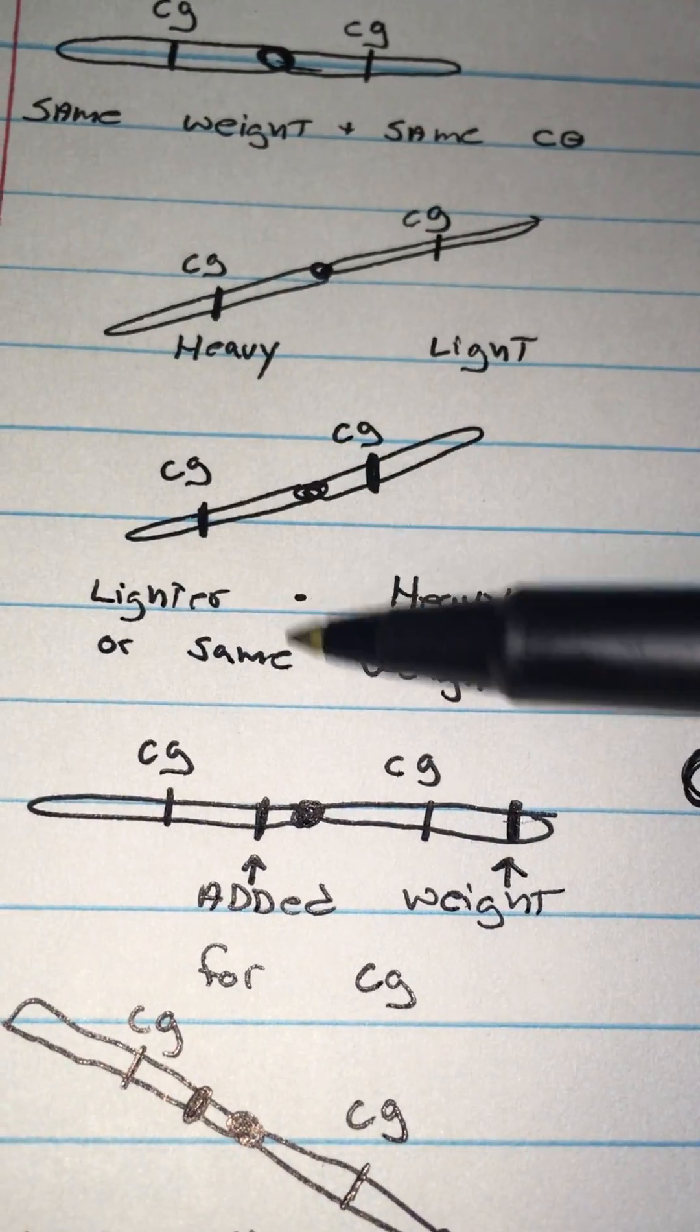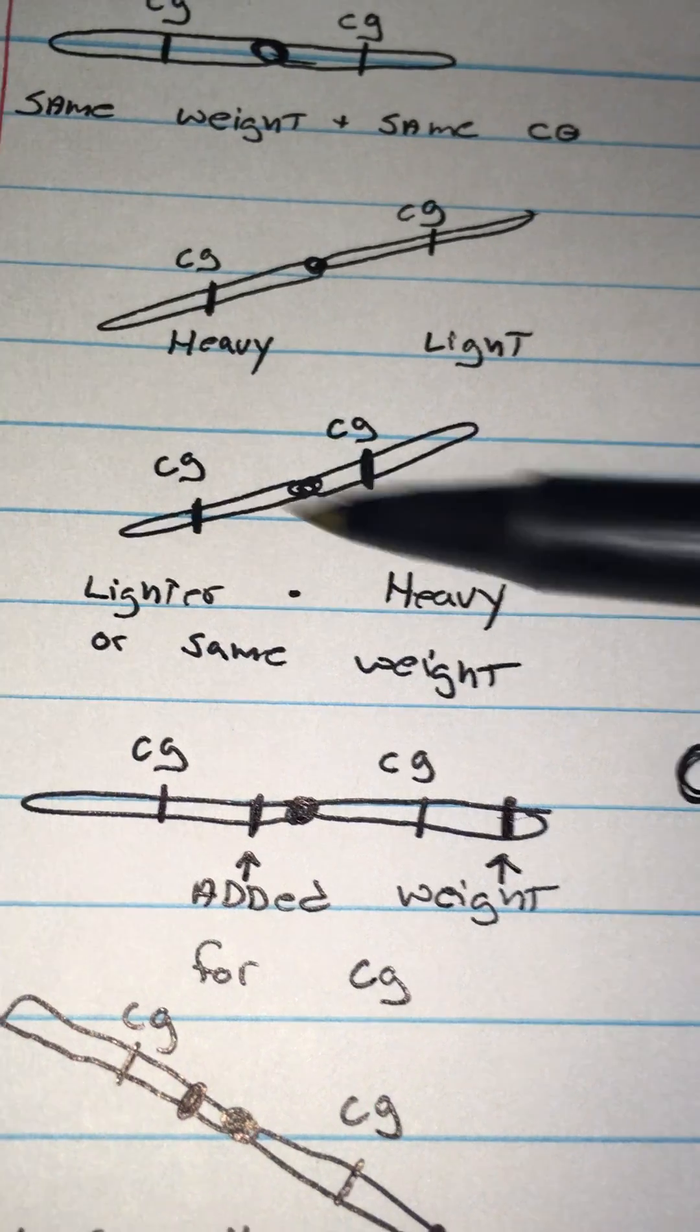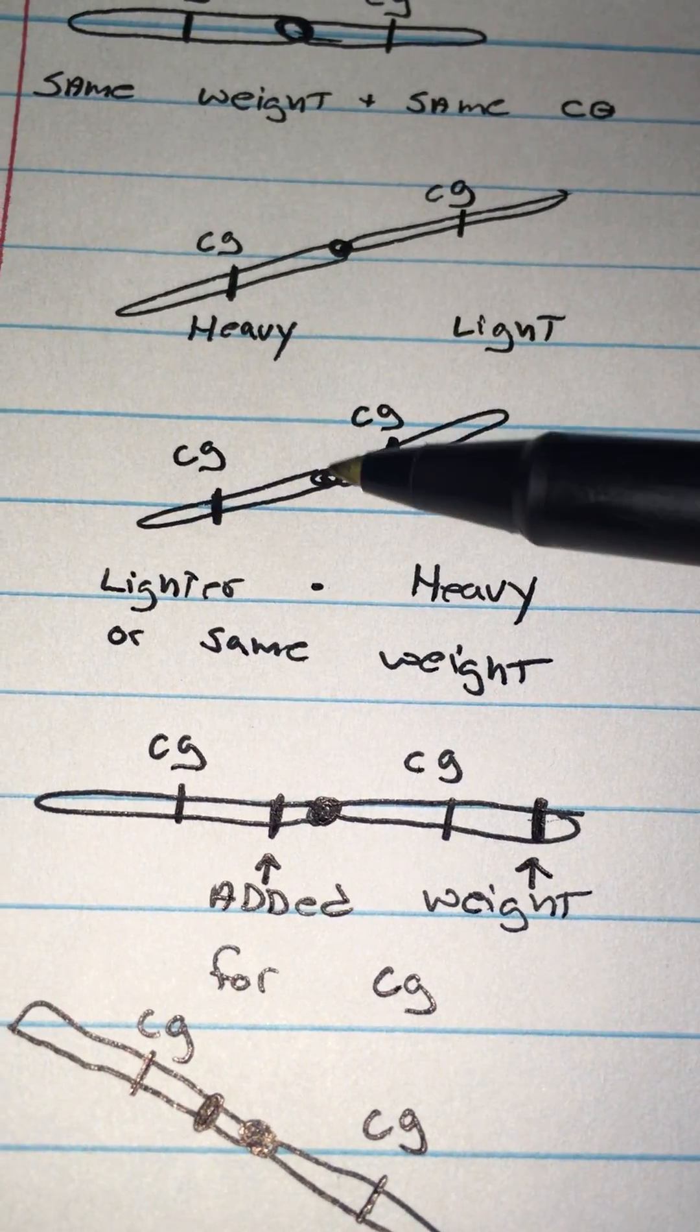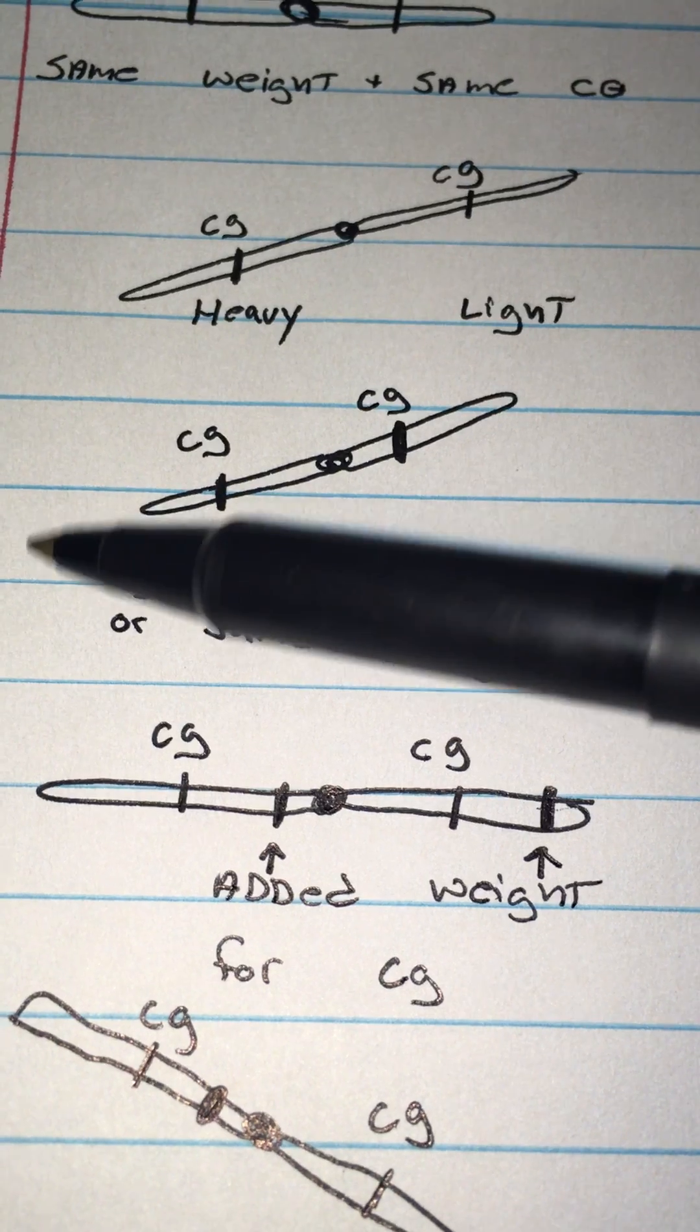With the exception, the lighter blade, or if they're the same weight, will drop if the center of gravity has been shifted further down this end.